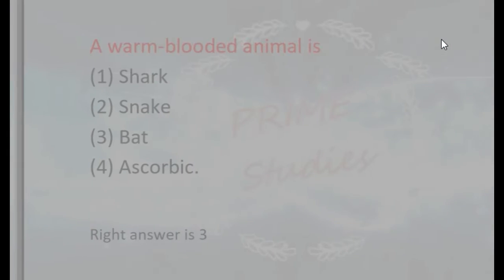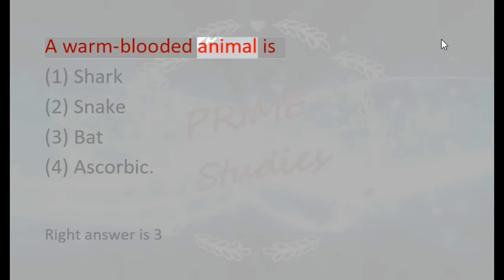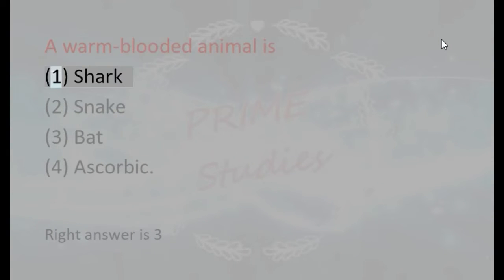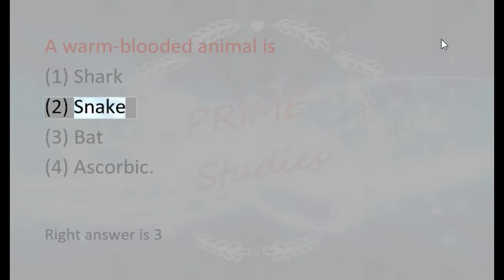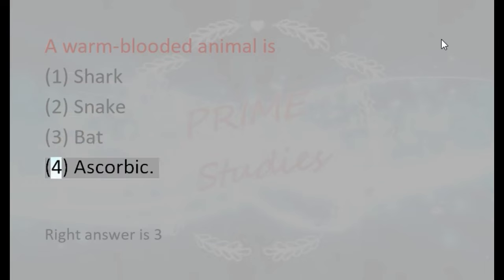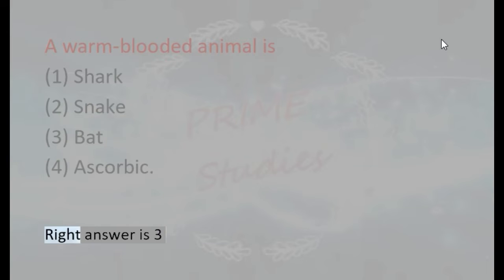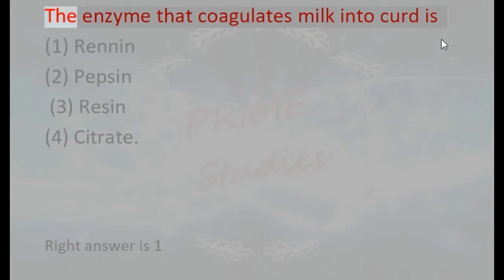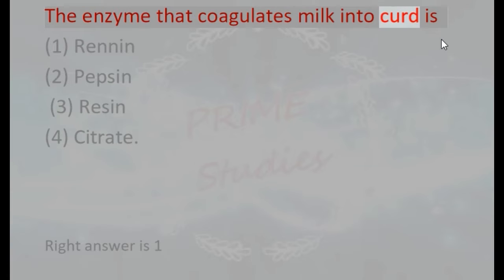A warm-blooded animal is: 1. Shark, 2. Snake, 3. Bat, 4. Ascorbic. Right answer is 3.